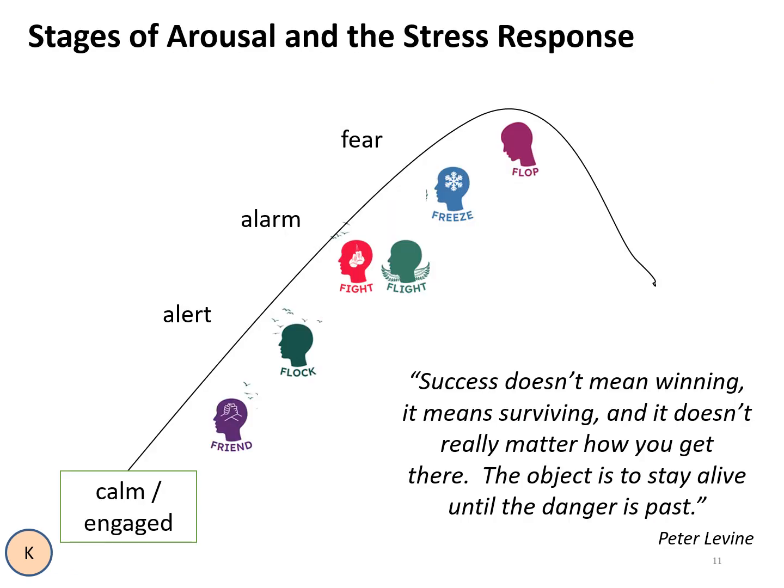This is a model of the stages of arousal and stress response. This curve shows the automatic survival responses we go into when we perceive threat, whether the threat is real or just perceived. Peter Levine states that success doesn't mean winning — it means surviving. The object for survival is to stay alive until the danger has passed. This curve shows how stages of arousal change as stresses increase or decrease. The calm, engaged state is where learning and positive social interactions occur at their best.